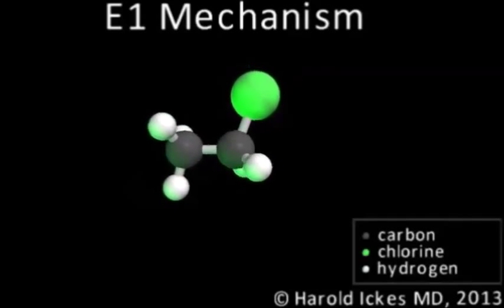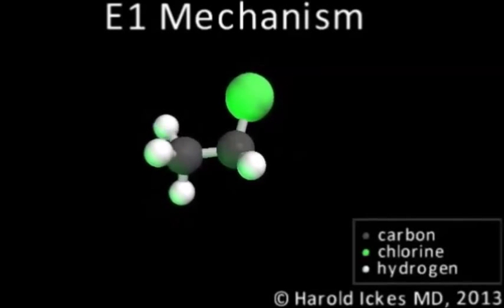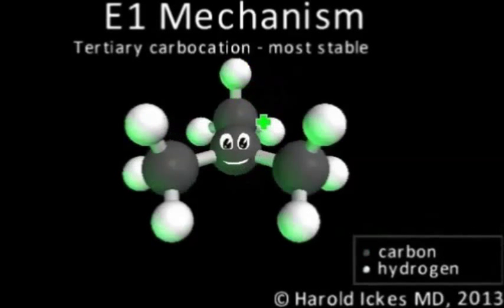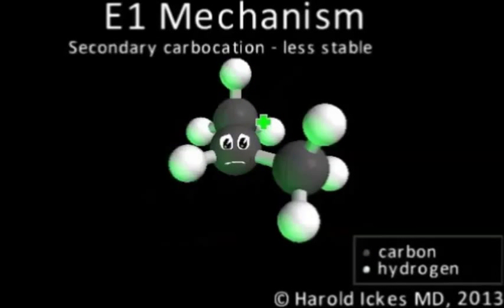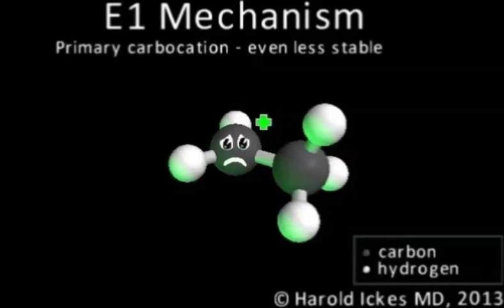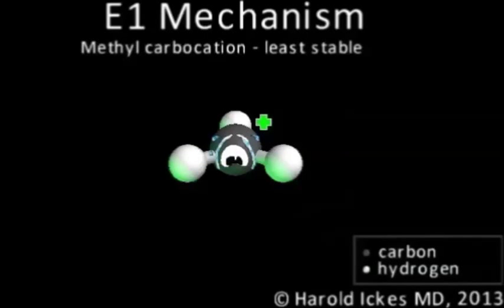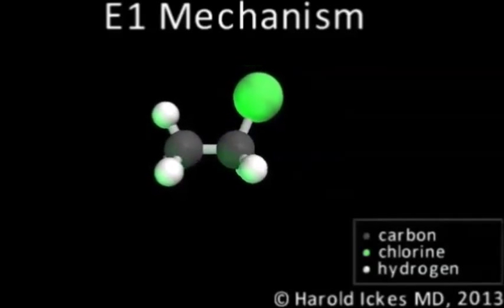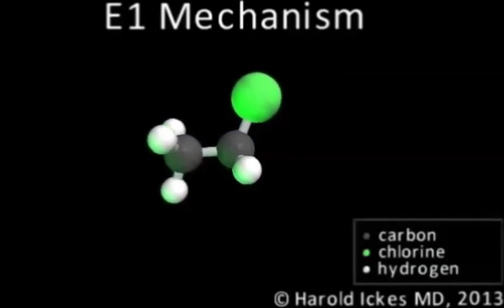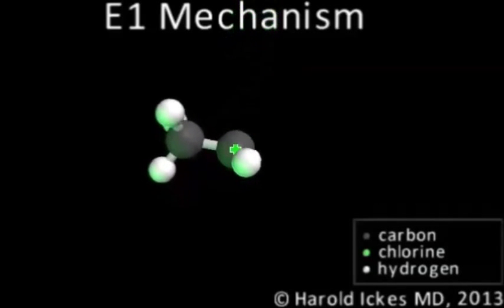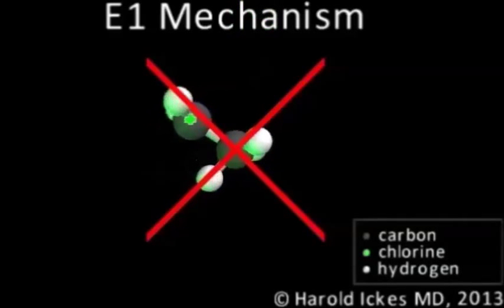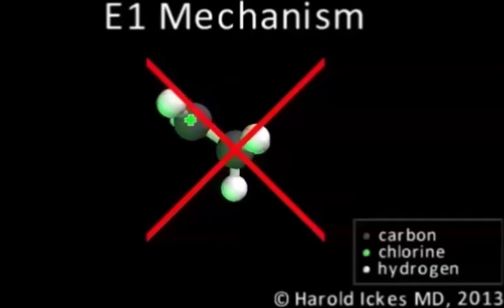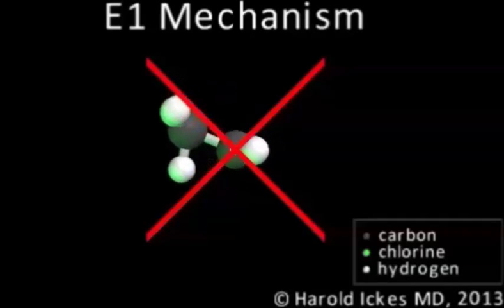To understand why, let's review the stability of carbocations. Carbocations are most stable in tertiary form, and least stable in methyl form, as this scene, originally from my carbocation video, shows. If we apply this understanding to our chloroethane molecule, we can see that if a chlorine breaks free, it will leave behind an unstable primary carbocation. That's not very good, so in theory, it should be highly unlikely for the chlorine to leave, even with heating.